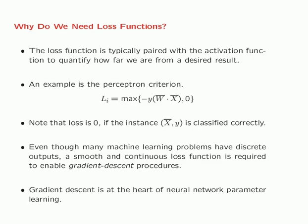Gradient descent is at the heart of all neural network learning. In most neural networks, at the output nodes, you create some form of loss function which is typically a function of the output nodes. You use the loss function in order to learn the parameters of the neural network with the use of gradient descent.